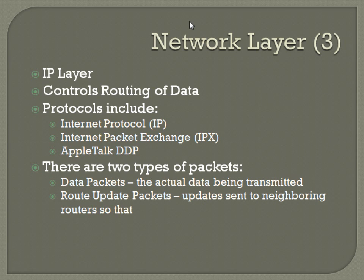Network layer — the IP layer — controls routing of data. Protocols include IP, IPX (which is not heavily used anymore — I don't think I had any questions involving IPX on the test), AppleTalk, DDP — I doubt I had any questions on those either. You really just need to think of this as the IP layer. There are two types of packets: data packets, which carry the actual information, and route update packets, which send routes to neighboring routers. When you hear a question about routed protocol versus routing protocol — a routing protocol would be like RIP, OSPF, or BGP, and a routed protocol would be basically anything else like IP, TCP, UDP.